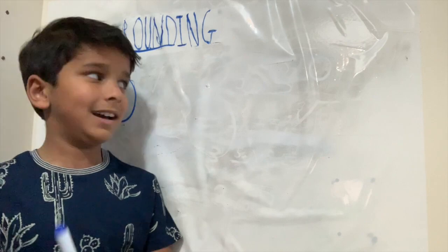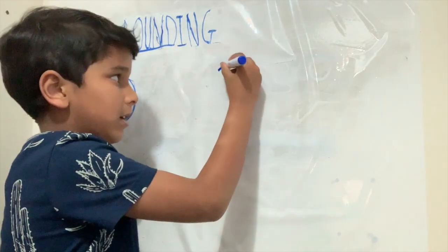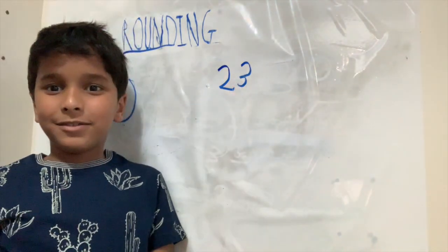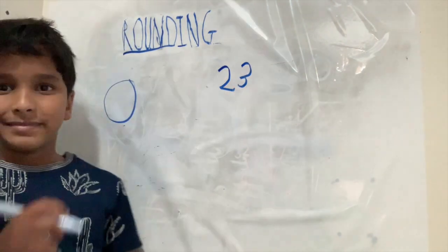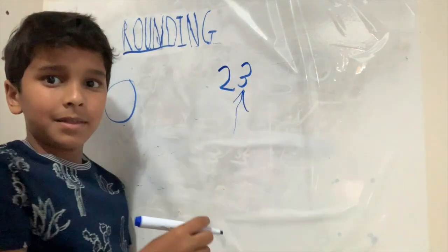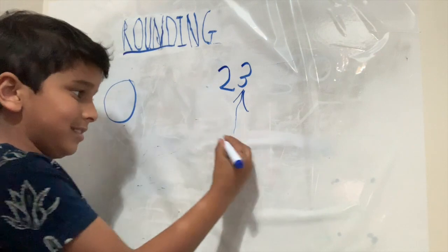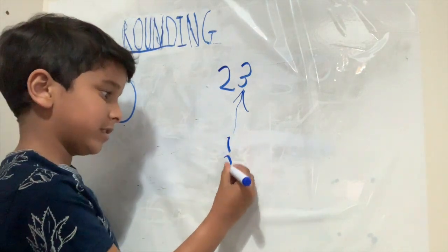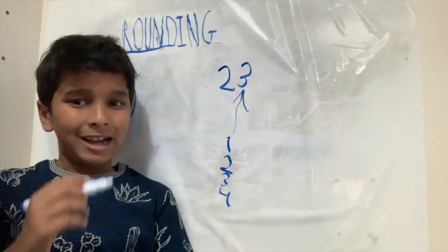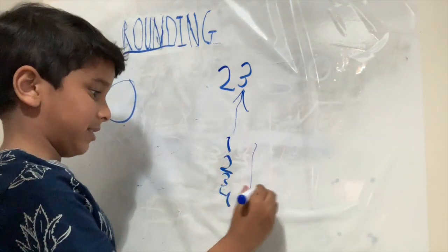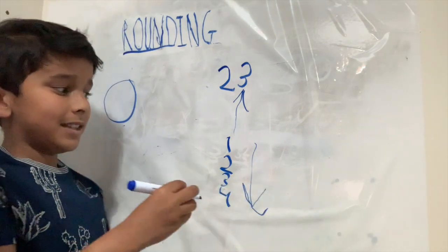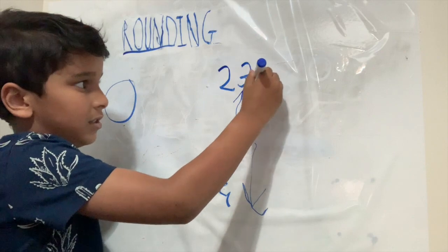Let's look at 23. When rounding to the nearest ten, any number that ends with 1, 2, 3, or 4 rounds down. So 23 rounds down to 20.